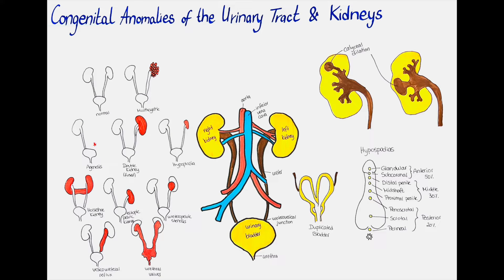In homolateral dystopia the kidney may be found in the pelvis, iliac area, lumbar area, or the chest. In heterolateral dystopia the crossed kidney may or may not fuse with the other one that is located in its normal position. The kidney can also be malrotated so that the hilum — where the blood vessels, nerve, and ureter go in and out of the kidney — is not pointing towards the spine but towards the flank.